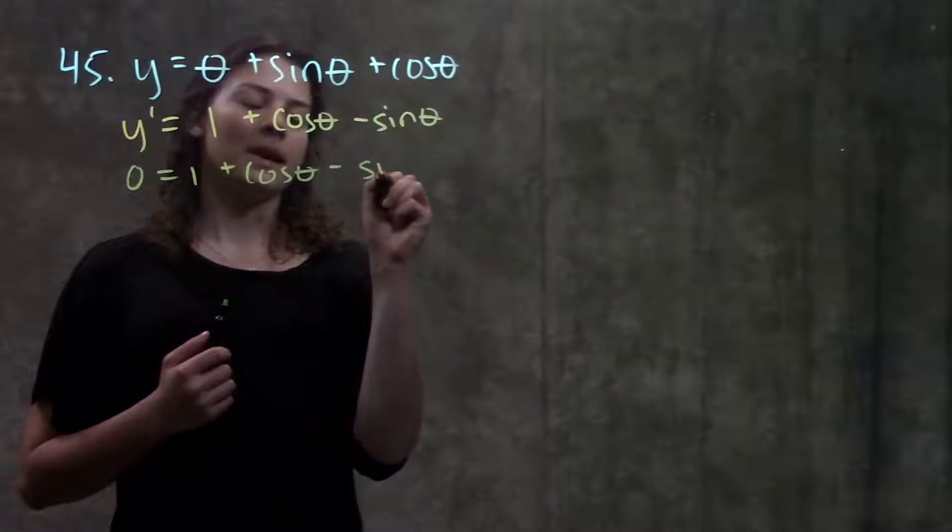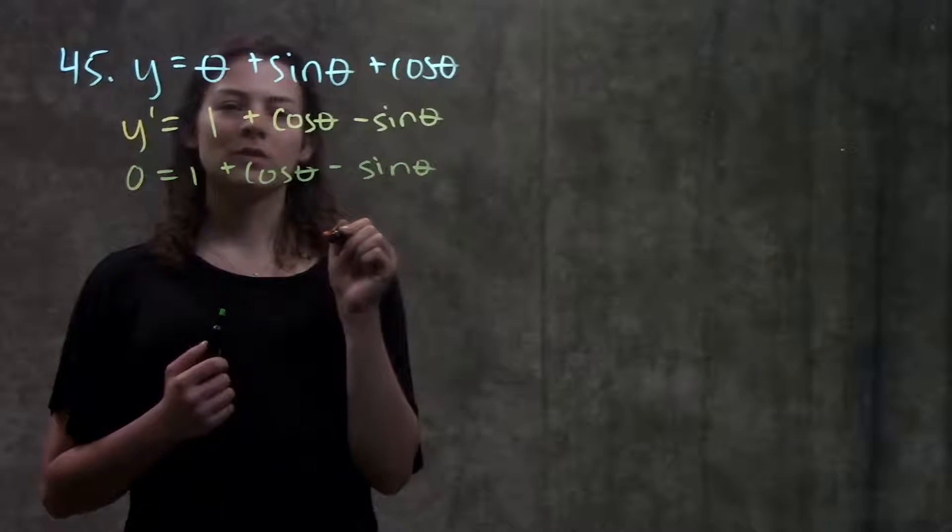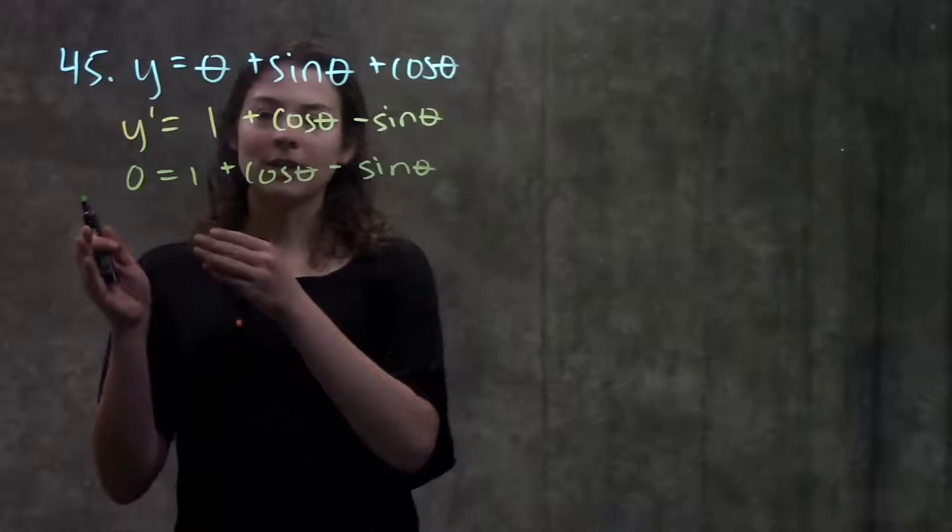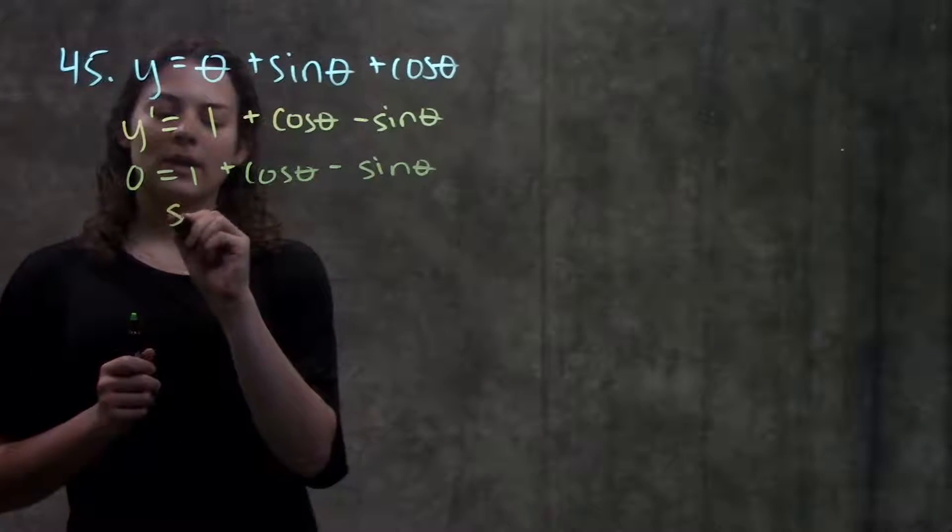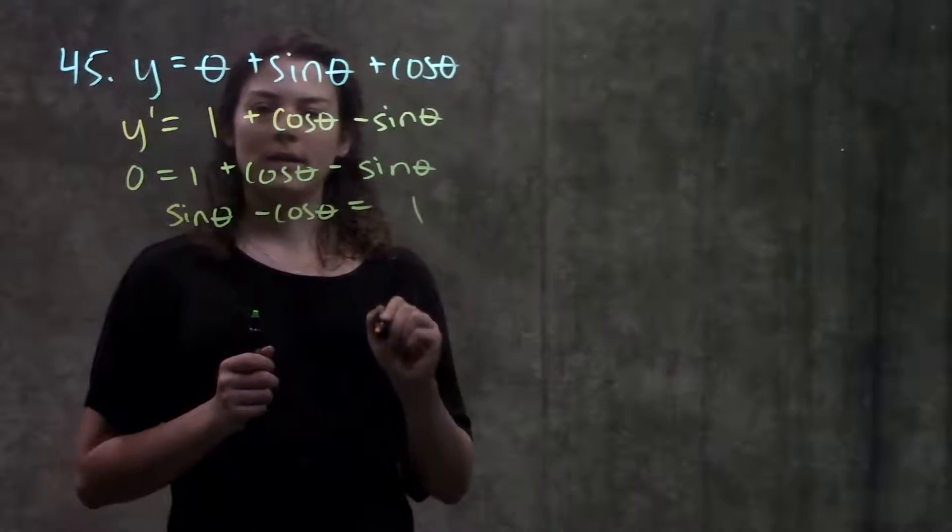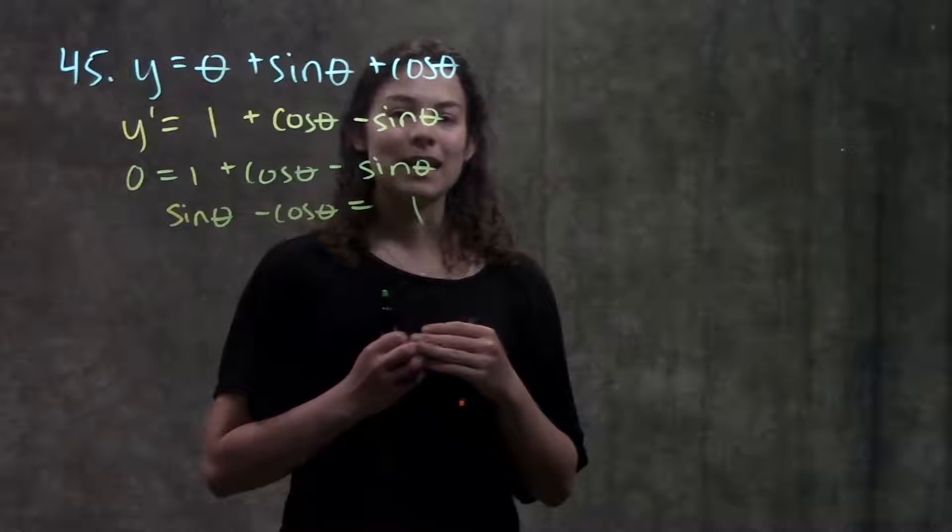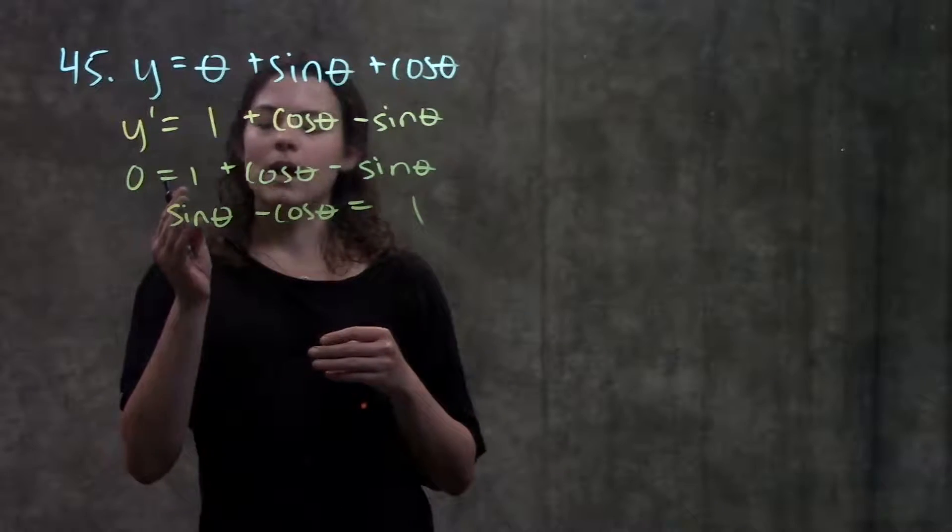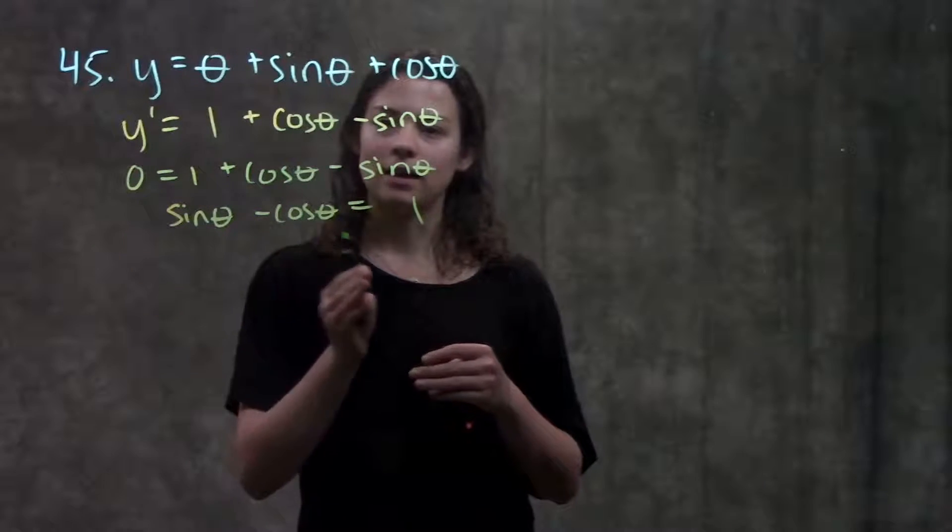And this is where the problem becomes difficult because we don't really solve this the way we would in normal equations. What I'm going to do is I'm going to take my trig functions over to one side and that'll give me sine theta minus cosine theta is equal to one, and from here you just kind of need to think of your unit circle values. So remember we're looking wherever sine theta minus cosine theta equals one.